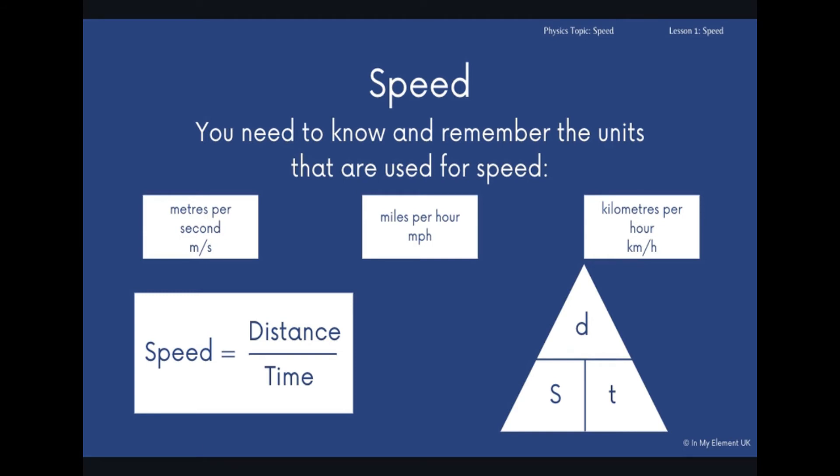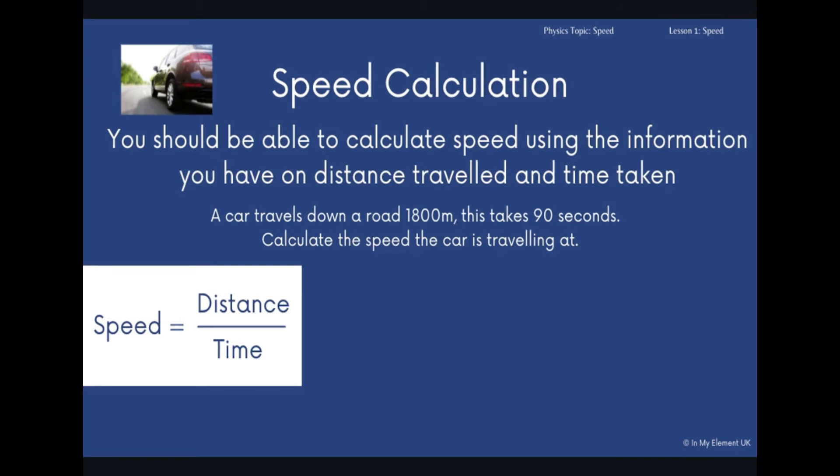Like I said, you need to be able to use this formula triangle, and you should be able to calculate speed using any information you've been given. So I've got an example here for you. The car travels down a road, 1,800 meters, and it takes 90 seconds. Now, you should be able to know from that what the units are that the speed is measured in. We're talking meters and seconds, so it's quite straightforward.